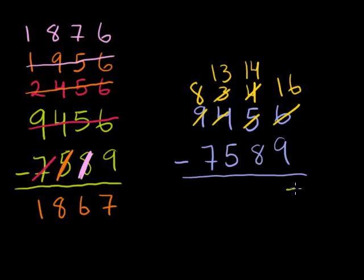So you get 16 minus 9 is 7. 14 minus 8 is 6. 13 minus 5 is 8. 8 minus 7 is 1. And lucky for us, we got the right answer.